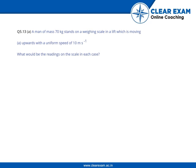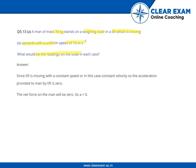A man of mass 70 kg stands on a weighing scale in a lift which is moving upward with a uniform speed of 10 meters per second. What would be the reading on the scale? Since the lift is moving with constant speed — in this case constant velocity — the acceleration will be zero. Therefore, the net force on the man will be zero.